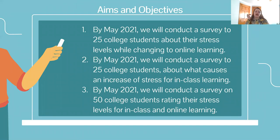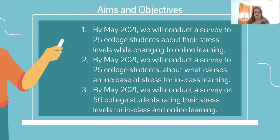The aims and objectives: by May of 2021, we will conduct a survey of 25 college students about what causes increased stress in in-class learning, and we will survey a total of 50 students rating their stress levels for both in-class and online learning. Fifty college students is on the lower end of what I'd like to reach, but I'd like to use the snowball effect to spread the survey, which I'll discuss shortly.